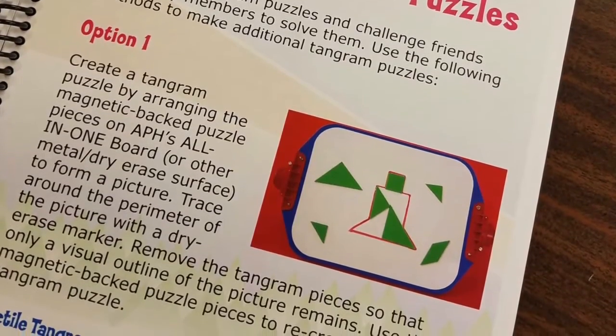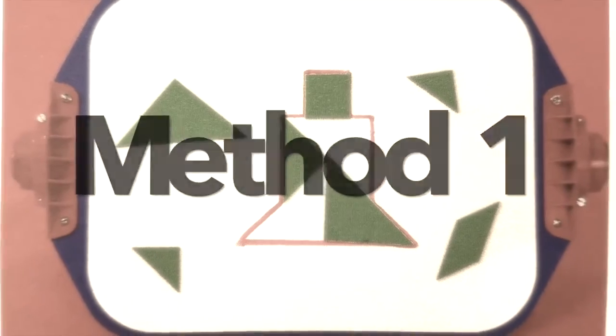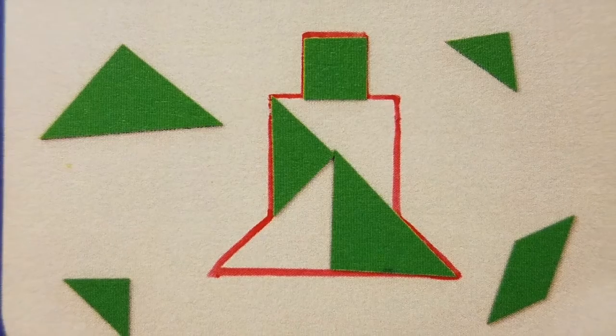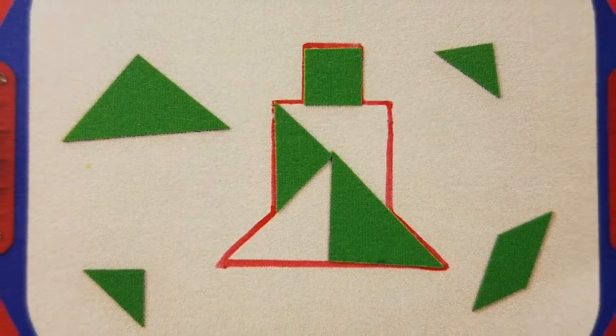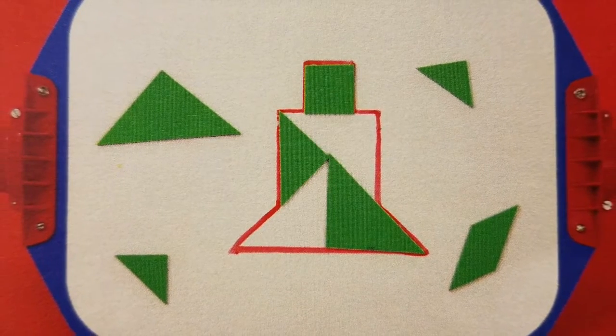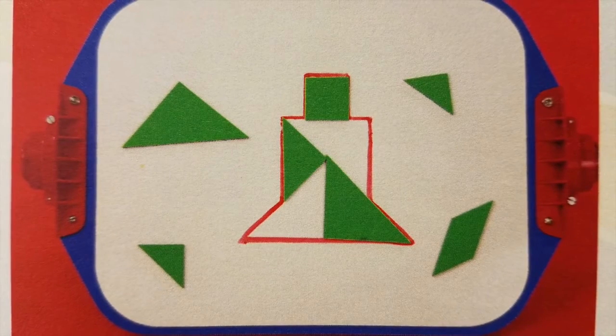You can make a tactile tangram puzzle by arranging the magnetic pieces on the all-in-one board or similar magnetic write-on wipe-off board. After the pieces are placed, trace around them with a dry erase marker. Remove the pieces from inside the outline and you're ready to recreate your puzzle or challenge someone else to try it.